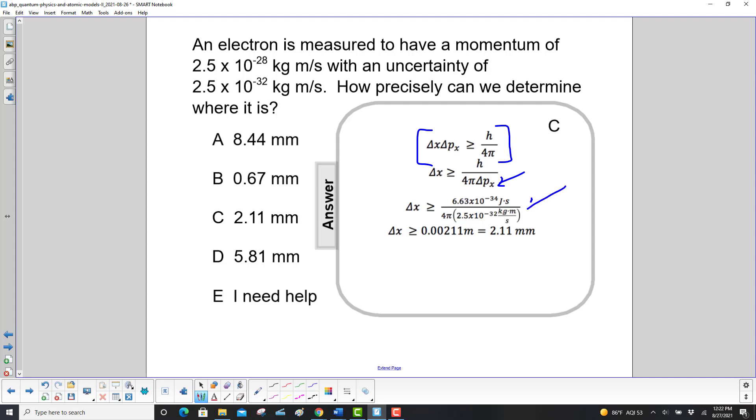Plug in our numbers and make sure you use Planck's constant with joules and we get a delta x greater than or equal to 2.11 millimeters. Answer is C.